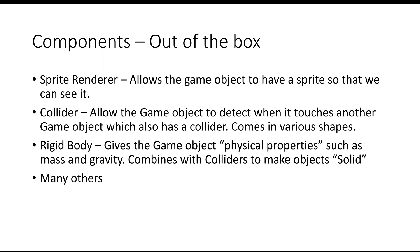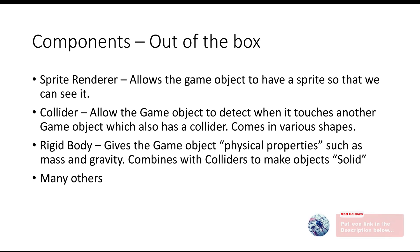Unity does have some out-of-the-box components, such as a sprite renderer, which allows us to give our game object some kind of visual appearance — we can add a sprite to it basically. We can also have a collider, which is a component that detects when our game object collides with another game object that also has a collider on it. Colliders can come in various shapes: boxes, circles, spheres, cubes, and polygons.